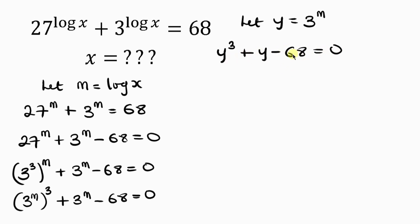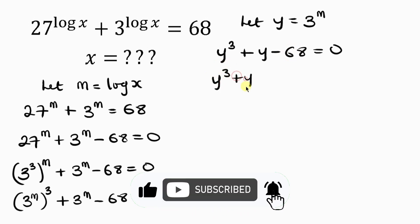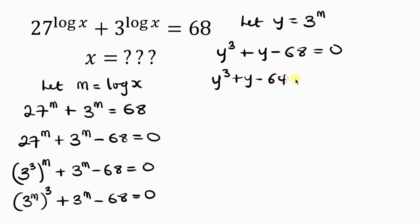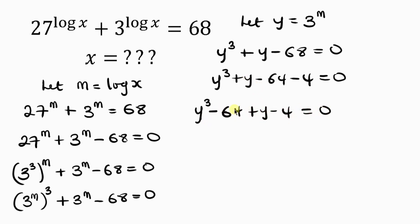In order to factorize this, I'm going to simplify negative 68. So I have y to the power of 3 plus y, then minus 64 minus 4 equal to 0, because negative 64 minus 4 gives negative 68. And 64 is a perfect cube. So let's pick this perfect cube closer to the cubic term: y cubed minus 64, plus y minus 4, equal to 0. We can simplify 64 to become 4 to the power of 3.